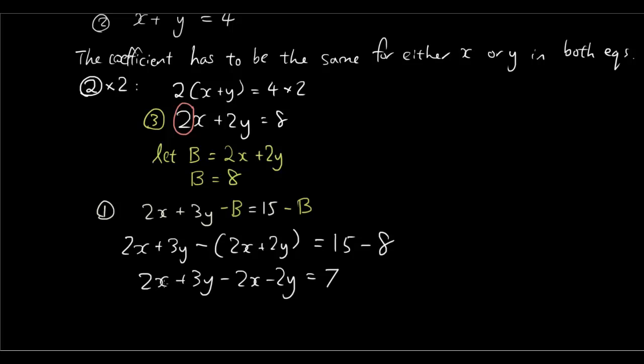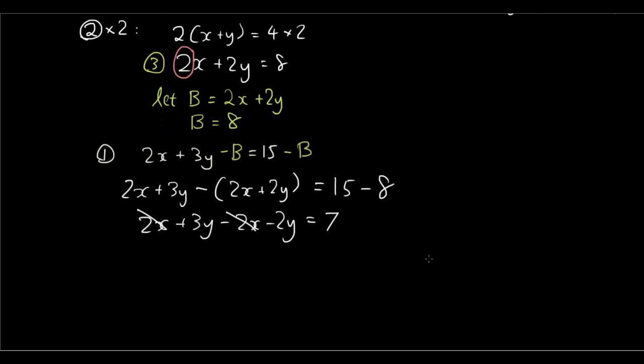Now on the left hand side we have 2x minus 2x which cancels each other out to nothing. And then 3y minus 2y is 1y. Y is equal to 7. So we've just found out what y equals.